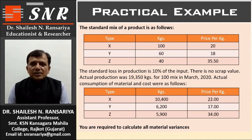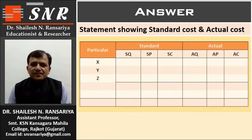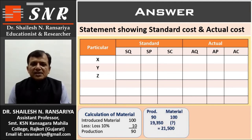We are required to calculate material variances. In this example, the standard mix is given for 200 kilograms while actual production is given for different kilograms. So first we will make the standard and actual production equal. For that, we calculate standard quantity. Input material: 100, loss 10%, so production is 90. Production is 90, required material is 100. Actual production is 19,350, so required material is 21,500.